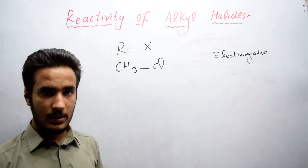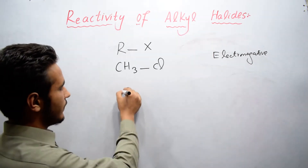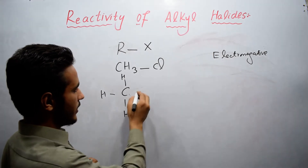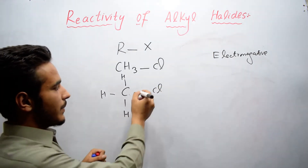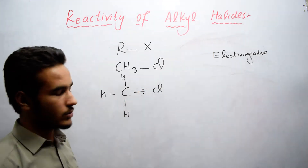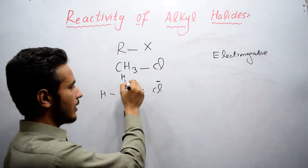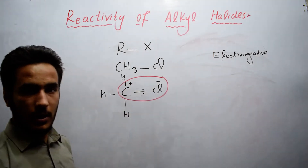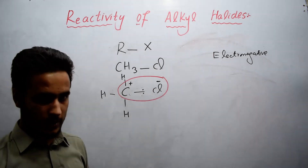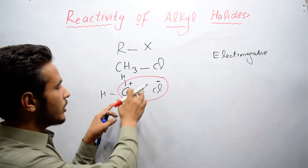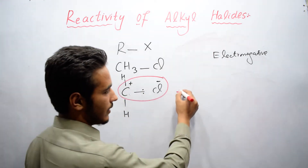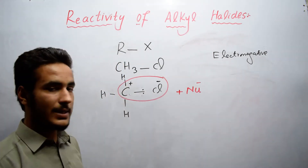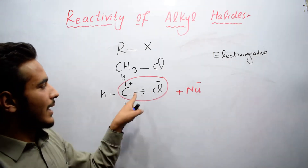Electronegativity is the ability of an atom to attract the shared pair of electrons toward itself. Carbon is less electronegative than halogen. So in CH₃Cl, chlorine attracts the shared pair of electrons toward itself — chlorine gets a negative charge and carbon gets a positive charge. This creates polarity in the molecule. Due to this polarity, alkyl halides are more reactive, and a nucleophile can easily attack on the carbon.